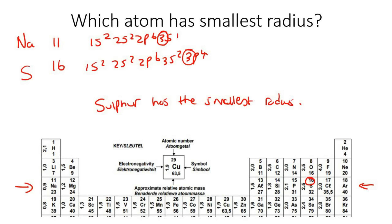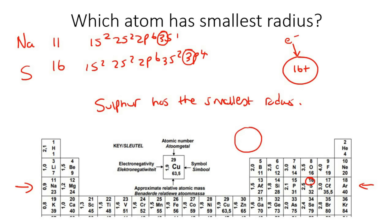Imagine you are an electron: there's a sulfur nucleus with 16 positives, and you're an electron moving around — that 16-positive nucleus is going to pull you very closely because 16 positives is very strong. Whereas if you have Na with only 11 protons, it's not as strong, so it won't pull the surrounding electrons as much. Because sulfur's electrons are pulled closer, this atom is a little bit smaller.